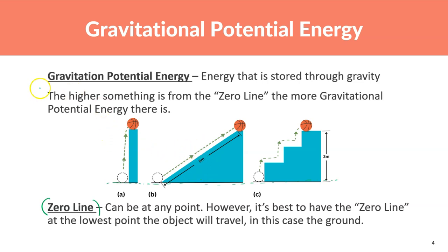The higher something is, the more gravitational potential energy it has. For example, if you drop a textbook from one foot it makes a certain amount of noise, but if you drop it from 100 feet it makes more noise and causes more damage — it has more energy.